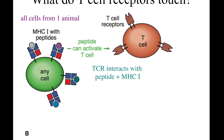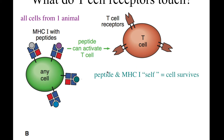If the peptide did not come from self, the T cell receptor can recognize that and kill the cell. But if it recognizes it — yes, that's a piece of the cell, I recognize that's you — then the cell will survive. If either the peptide or the MHC molecule did not come from self, the cell is killed.